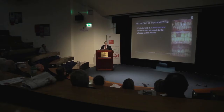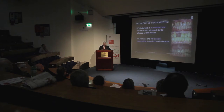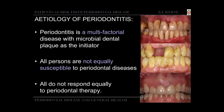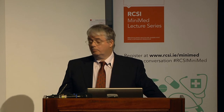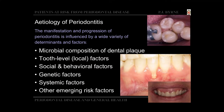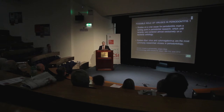The principal risk factors for periodontal disease are shared by other chronic diseases. The cause or etiology of periodontal disease is multifactorial, and dental plaque is the initiator. However, not all persons are equally susceptible, and as a clinician I've found that not all respond equally to therapy. The manifestation and progression of periodontitis is influenced by a wide variety of factors: the microbial composition of dental plaque, tooth-level or local factors like grooves or bifurcations, social and behavioral factors like smoking, genetic factors, systemic factors, and emerging risk factors like viruses.